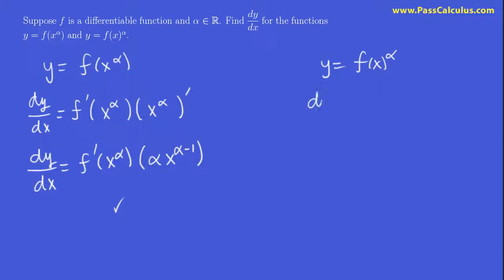How about over here? Well, on this one, whereas over here f was the outermost function, this time alpha is the outermost function, exponentiation by alpha. So we're going to have to do that first. The alpha is going to come to the front. We're ignoring the f of x to the alpha minus 1 times the derivative of what we're ignoring, right?